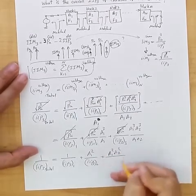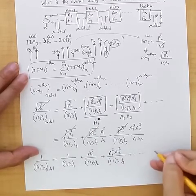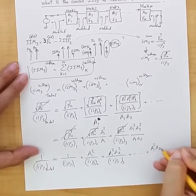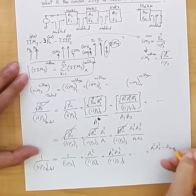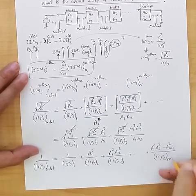We can say plus A1 squared, A2 squared, A(n-1) squared, divided by IIP3 of block N.